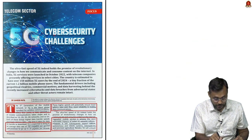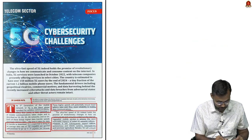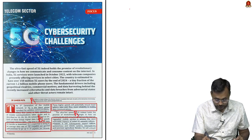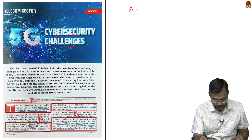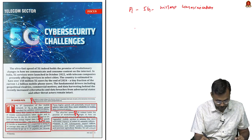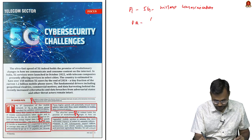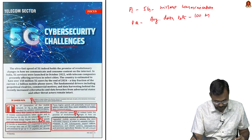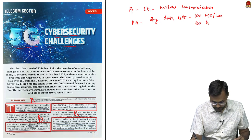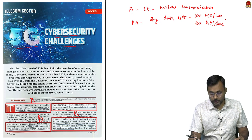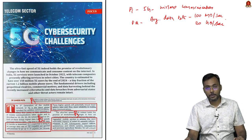The next article covers 5G cybersecurity challenges. Paragraph 1 explains that 5G is fifth-generation wireless communication. Paragraph 2 gives the potential of 5G: the average data rate is around 100 megabits per second and can go up to 20 gigabits per second — a massive amount of data per second.